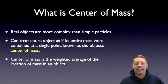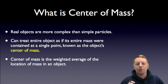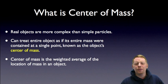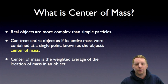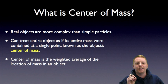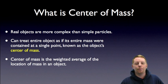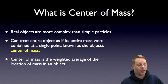Real objects are more complex than simple point particles. So far, we've been talking about point particles — one little tiny point that has a bunch of mass — but the real world doesn't work that way. If we use the right mathematical model, we can treat a more complex object as if all of its mass was centered at a single point, and then treat it as a point particle. It makes the math much simpler. The center of mass, then, is the weighted average of the location of mass in an object.